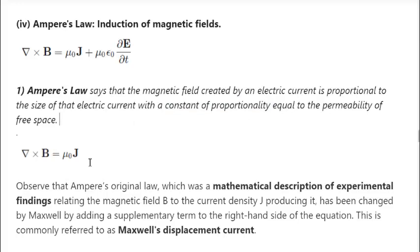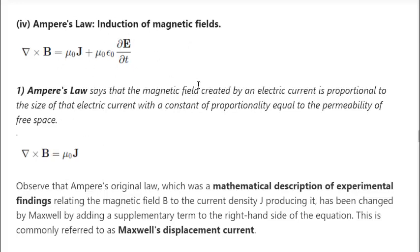Observe that Ampere's original law — a mathematical description of experimental findings relating the magnetic field to the current density producing it — was changed by Maxwell by adding a supplementary term to the right-hand side of the equation. This term is often referred to as the displacement current. Before Maxwell, you had the original Ampere's law; after Maxwell added this displacement current term, the equation was modified.